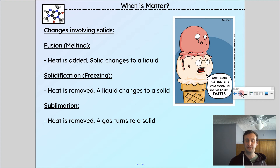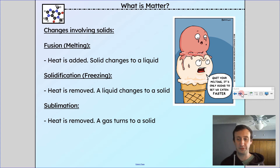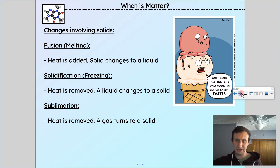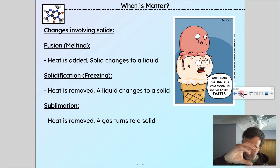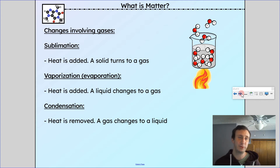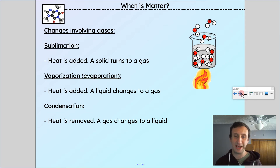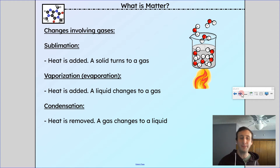Sublimation refers to both a gas going to a solid and a solid going to a gas. The classic example is dry ice — solid dry ice turning directly to gaseous carbon dioxide. Going from gas to solid also happens and is sometimes used to purify solids by causing sublimation and collecting it on a cold surface. Changes involving gases also include vaporization — a liquid changing to a gas, which is endothermic — and condensation, which is a gas turning to a liquid and releases energy, making it exothermic.